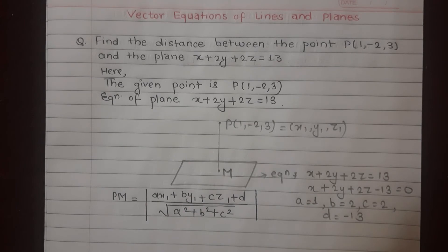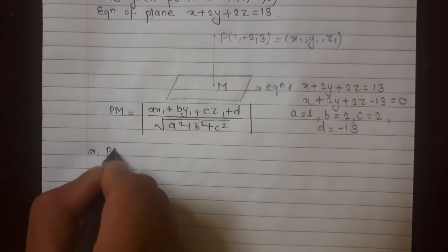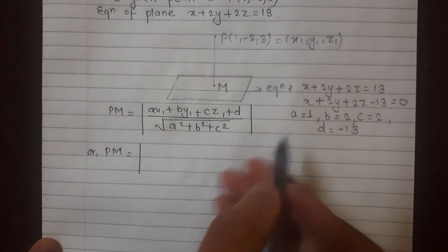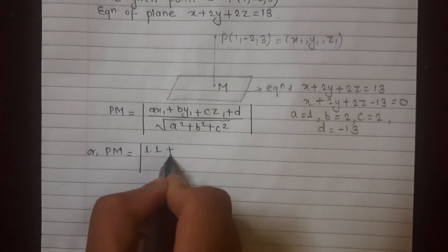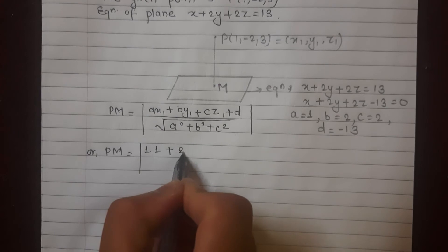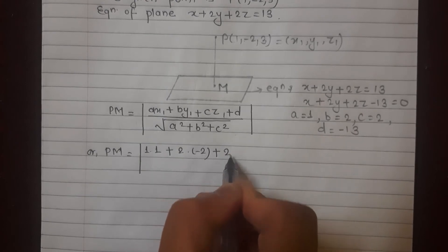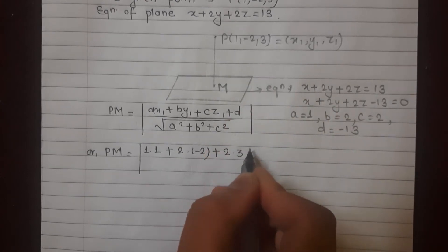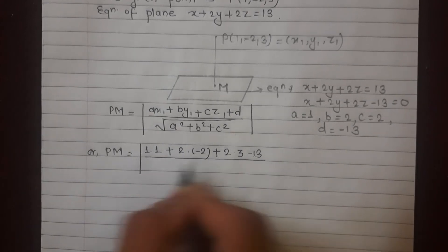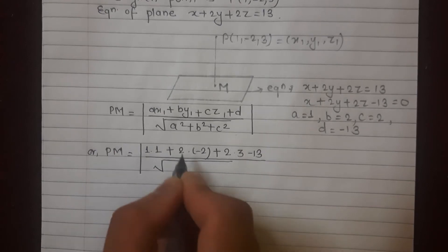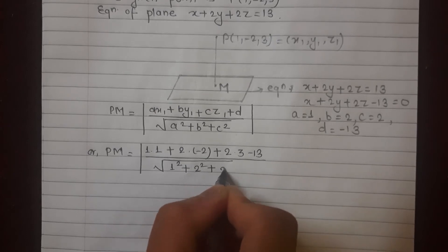Now substituting into the formula: PM equals a(1) into x1(1), plus b(2) into y1(-2), plus c(2) into z1(3), plus d(-13), all divided by root under a squared (1 squared) plus b squared (2 squared) plus c squared (2 squared).